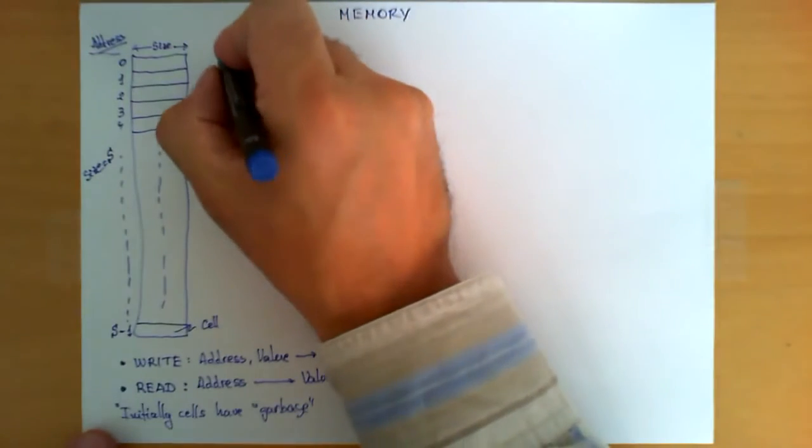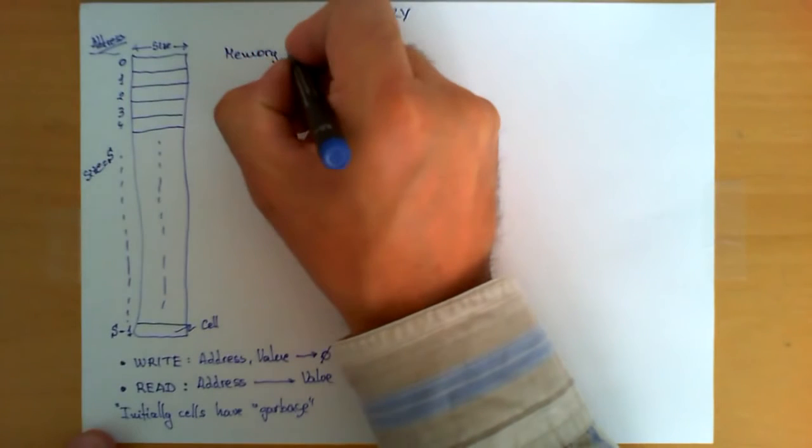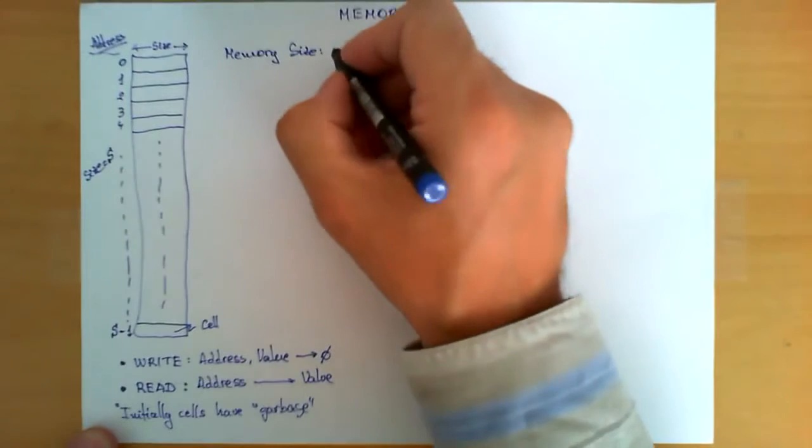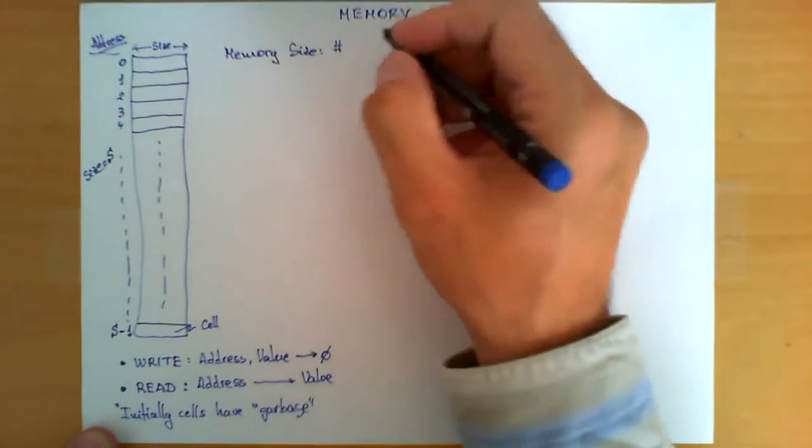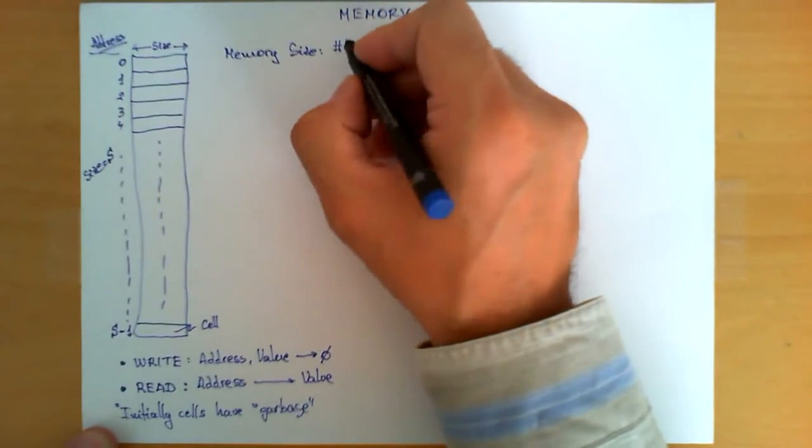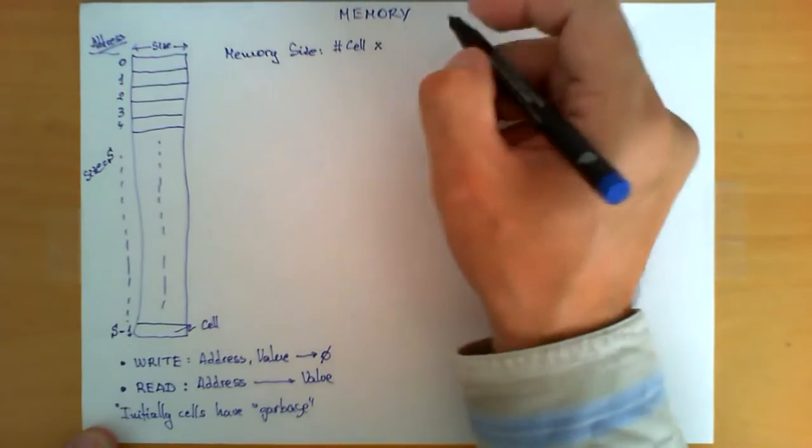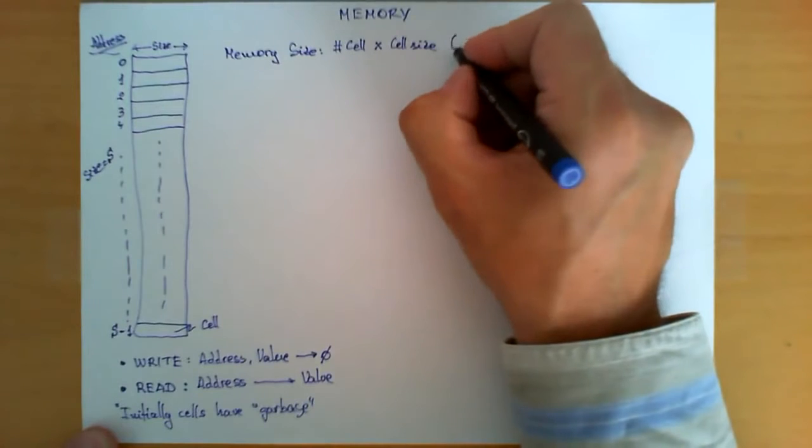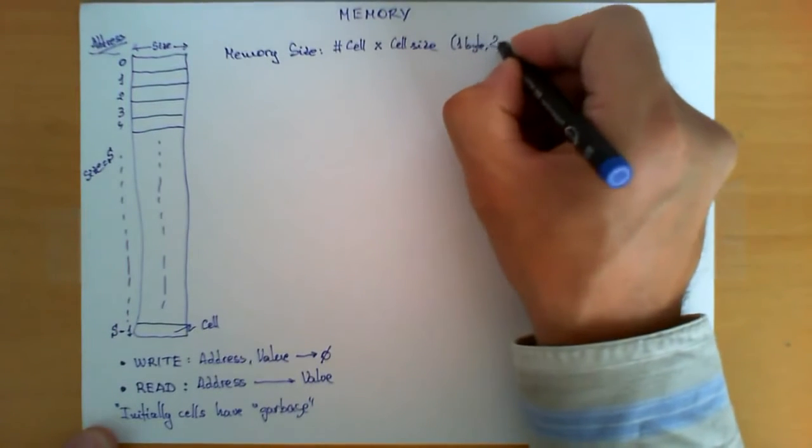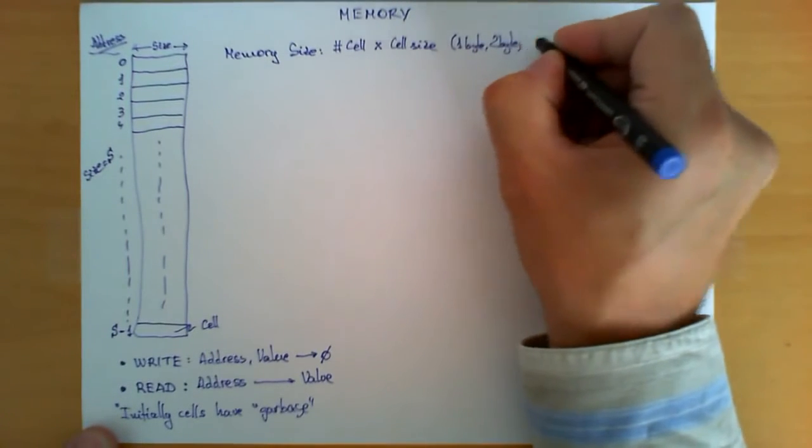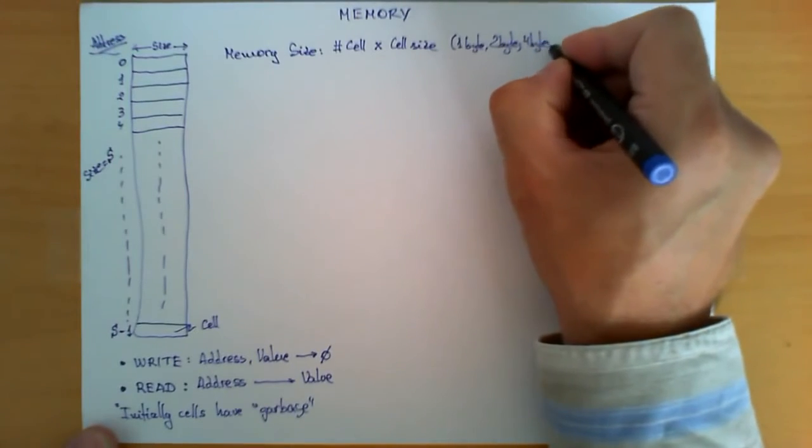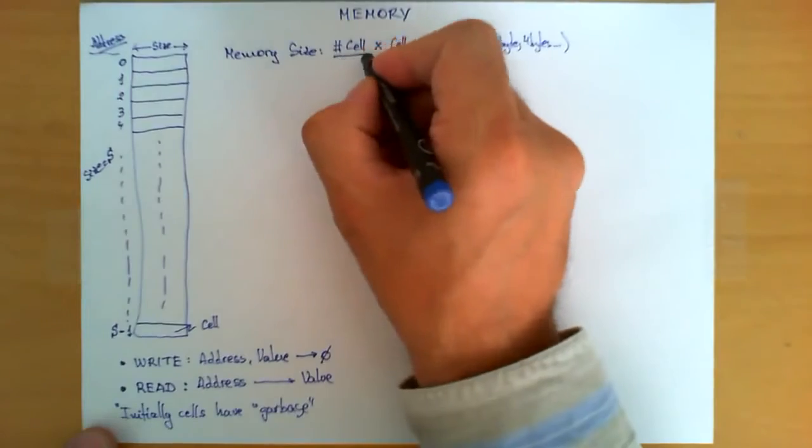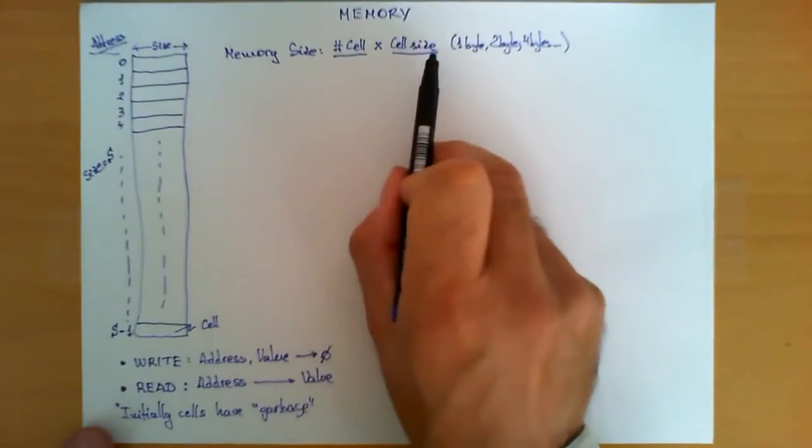Now let's talk briefly about memory size. As you can see, the size of one of this table depends on the cell size, and the formula to obtain the memory size is the number of cells that you have in your memory times the cell size. As we said before, the cell size typically is either one byte, perhaps two bytes, or maybe sometimes even four bytes.